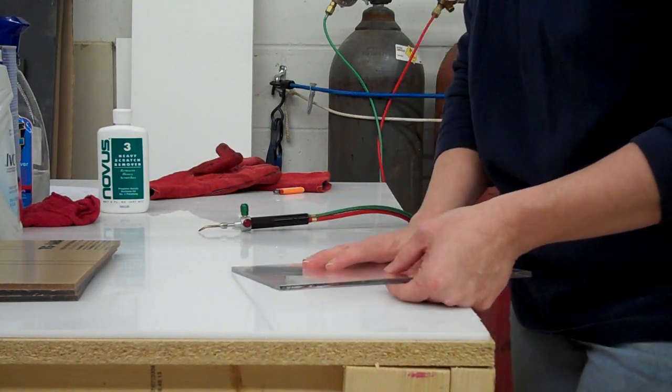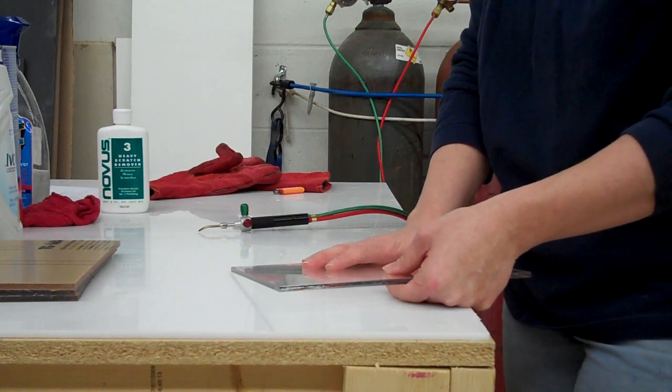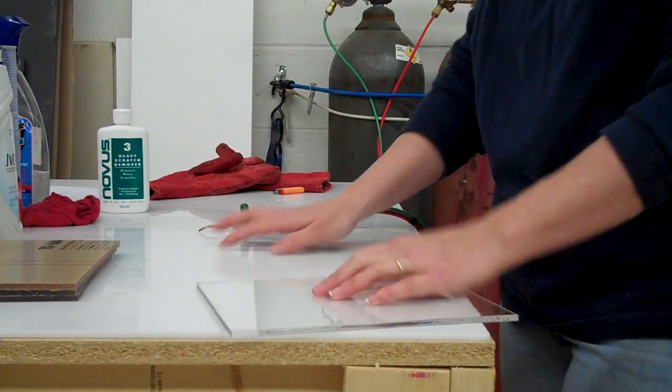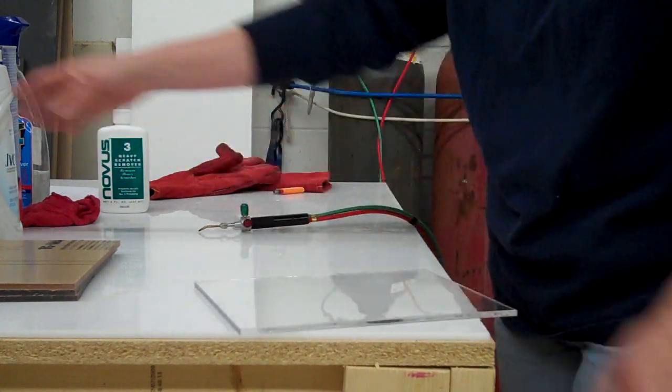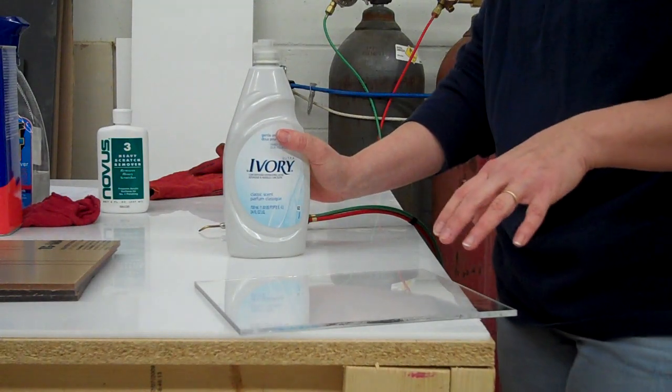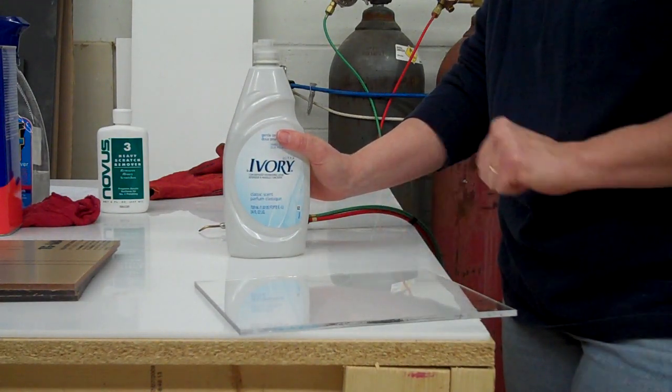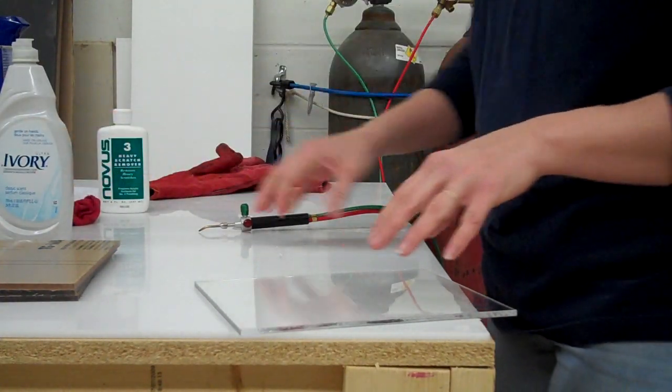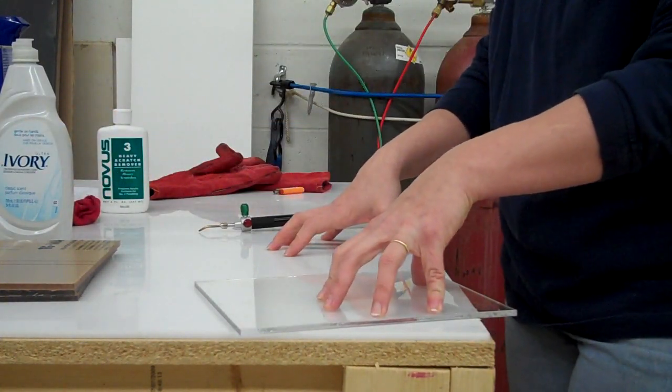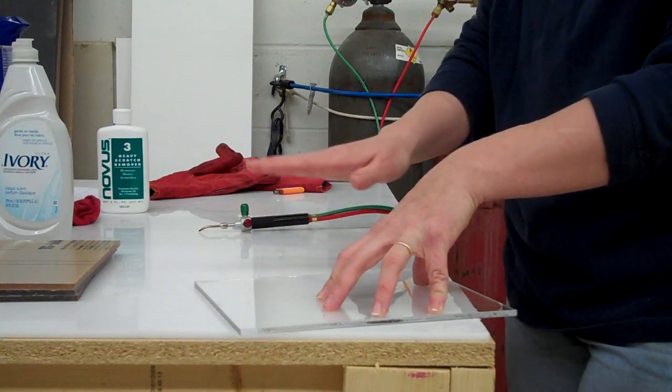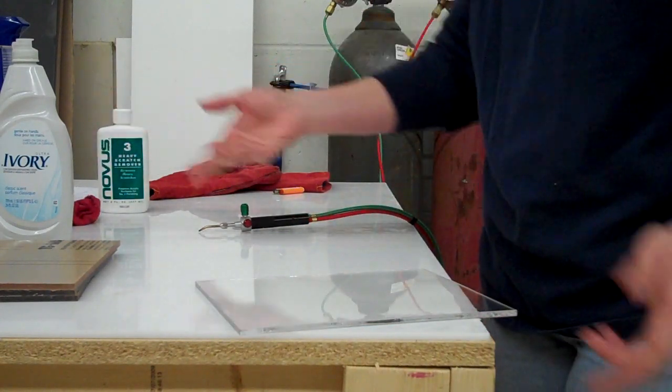As far as general cleaning of fingerprints, Ivory or Dove soap - you do not want the antibacterial because it will kind of eat away a little bit at your plex. You do not want to use any ammonia base on plexiglass - it will tend to yellow it through time. So no Windex, no glass cleaners. I just like soap and water, and then rinse it off and dry it off.